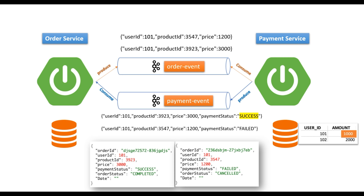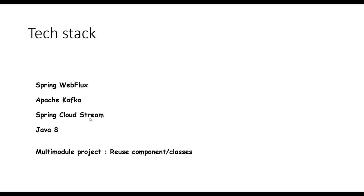This is how the Saga choreography pattern works. We'll implement the same example by creating two services — order service and payment service. The tech stack includes Spring WebFlux, Apache Kafka, Spring Cloud Stream, Java 8, and a multi-module project structure to reuse common components. If you're not familiar with Spring WebFlux, Kafka, Spring Cloud Stream, or multi-module projects, check out the respective playlists on Java Techie.